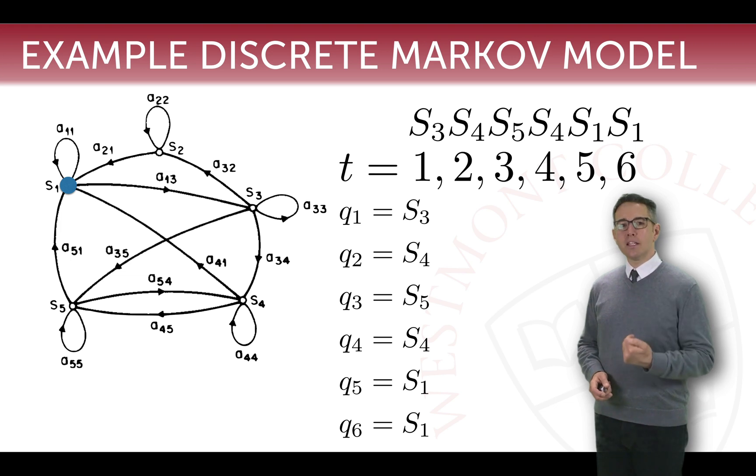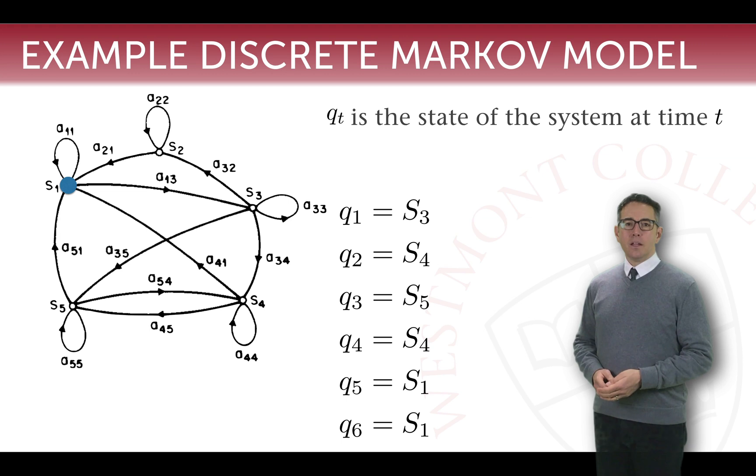So as we walk through the sequence of beats q1, 2, 3, 4, 5, 6, that variable takes on the value of the state that we were in. We can say that qt is the state of the system at time t.